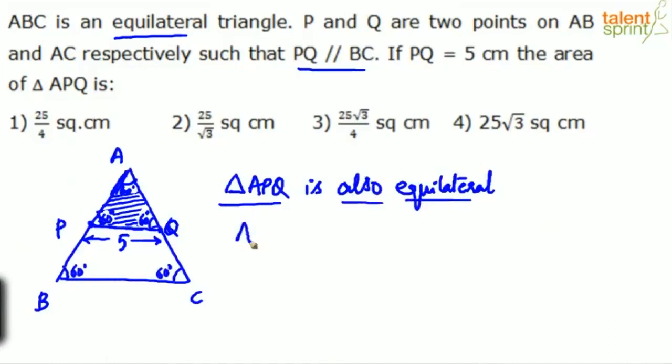So area of triangle APQ. How do you get the area of an equilateral triangle? Root 3 by 4 A square where A is the side. What is the side of this triangle? 5. So root 3 by 4 times 5 square, so that comes out to be 25 root 3 by 4. Option 3.